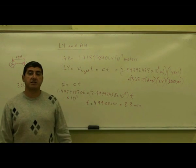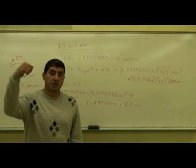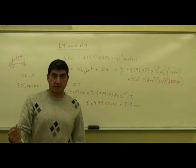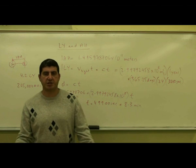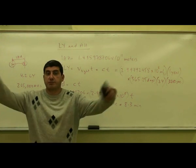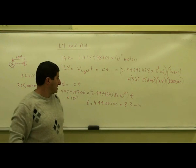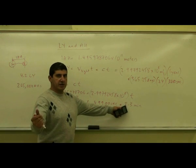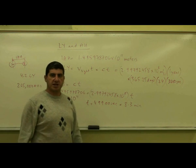So it takes like 8.3 minutes to get here from the Sun. That means we see the Sun as it was 8 minutes ago. You never see the present of the Sun. You never see the present of any other star. So if the Sun were to disappear right now, we would not know about it until 8 minutes later.